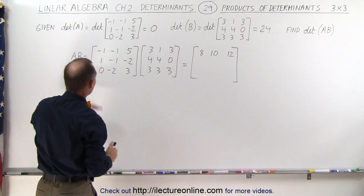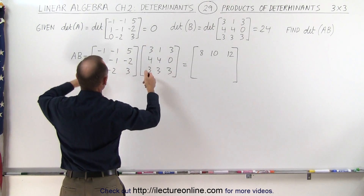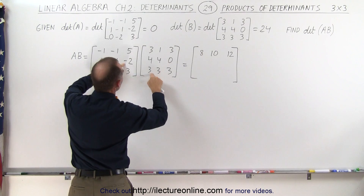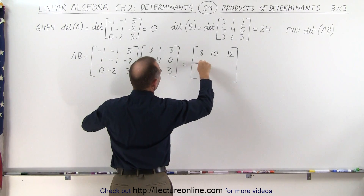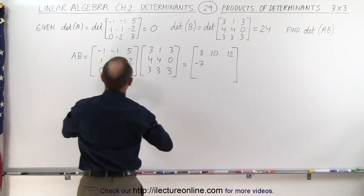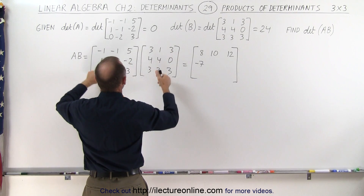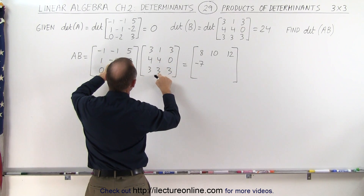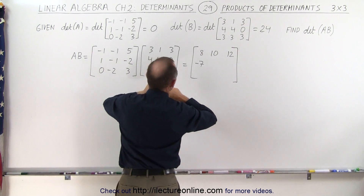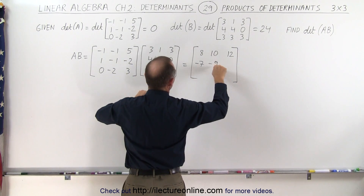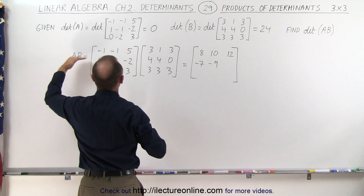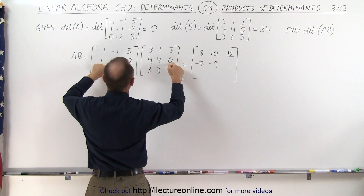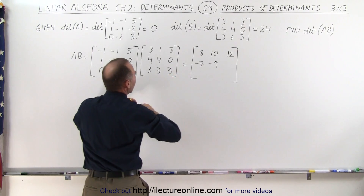Now we go for the second row. Second row, first column: 3, minus 4 is minus 1, minus 6 is minus 7. Second row, second column: minus 6 is minus 9. And second row, third column: 3, plus 0 is still 3, minus 6 is minus 3.